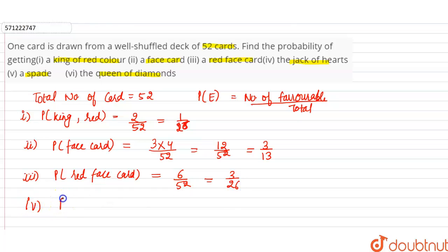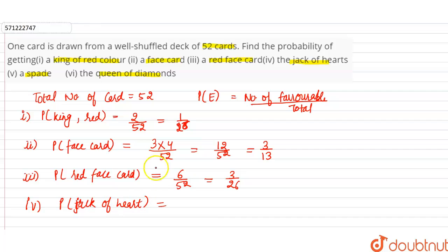The fourth part asks to find the probability that the card drawn is the jack of hearts. Jack of hearts means there is one jack of heart — J of red color, of heart. So there is one jack of heart. So probability will be equal to 1 divided by 52.